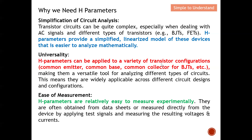A second reason is that H parameters can be applied to a variety of transistor configurations. For BJT, we have common emitter, common base, and common collector configurations. H parameters can apply to all three, making them very versatile tools to analyze different types of circuits, and they are widely applicable across different circuit designs and configurations.